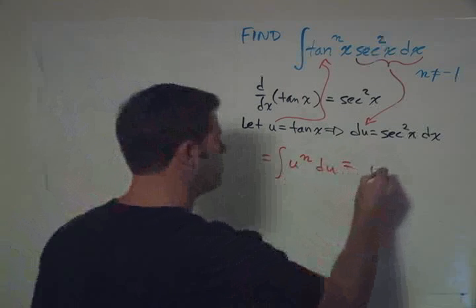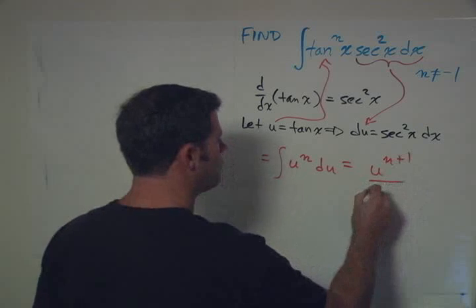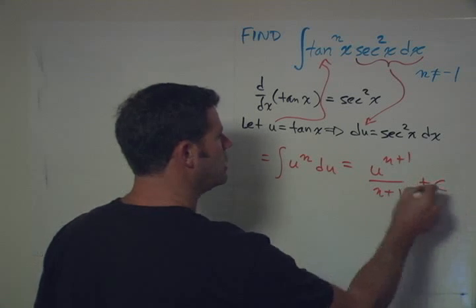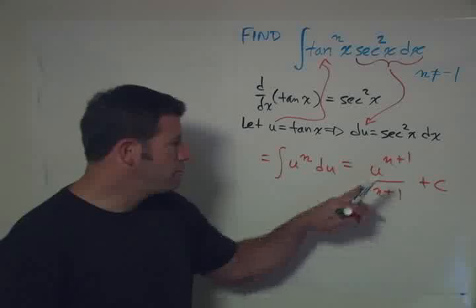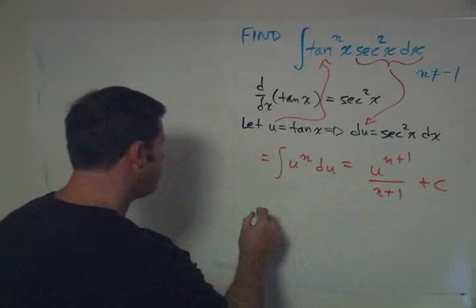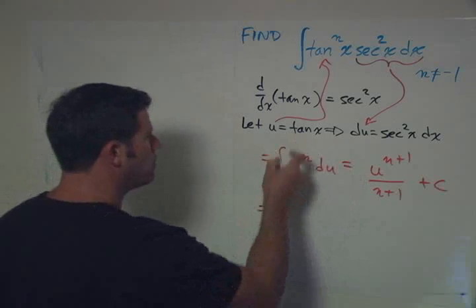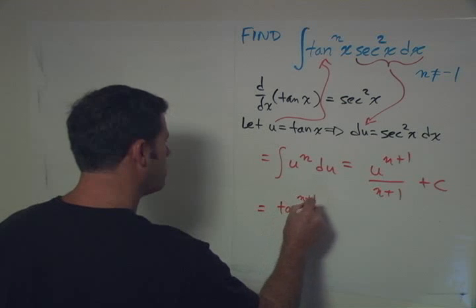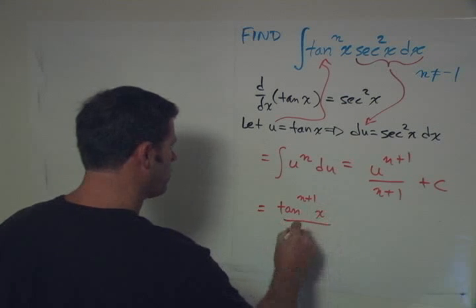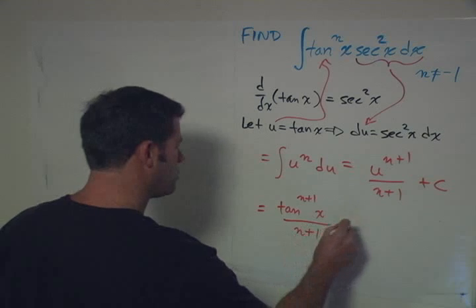Which we know to be u to the n plus 1 power over n plus 1 plus c. And now all we have to do is substitute back in for u. So the final answer then is going to be tangent to the n plus 1 power of x over n plus 1 plus c.